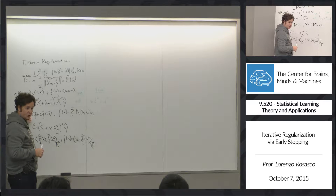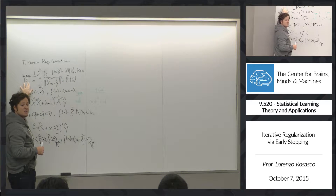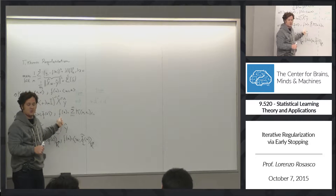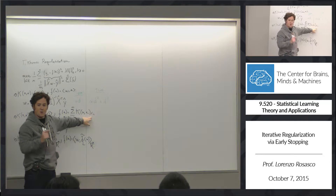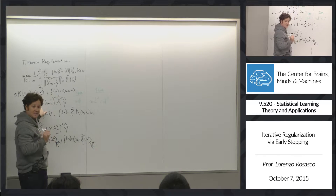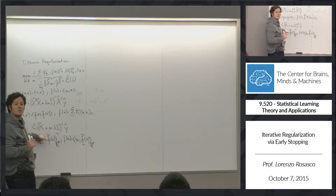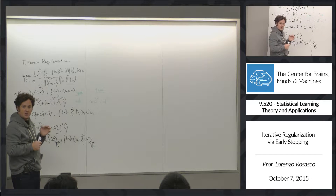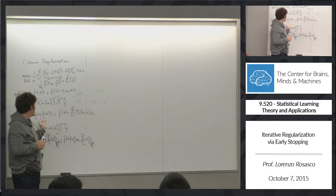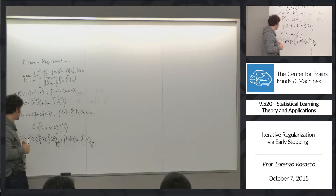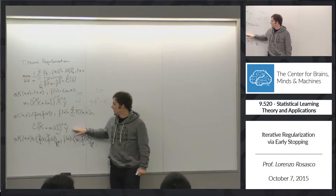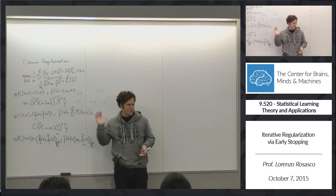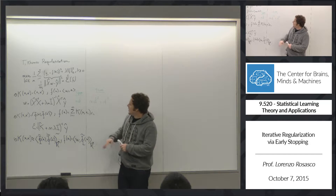For a generic positive definite kernel, the solution to the problem in the reproducing kernel Hilbert space is given by a linear combination of kernel functions at the training set points — the representer theorem. There are now n coefficients, given by the solution of a linear system where k-hat is the kernel matrix: the matrix whose entries compare any two pairs of points in the training set via the kernel function.